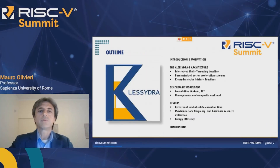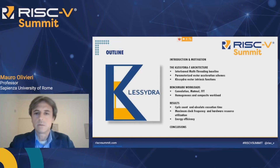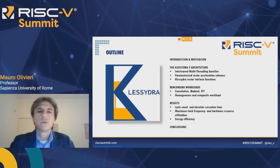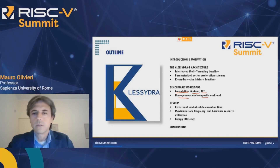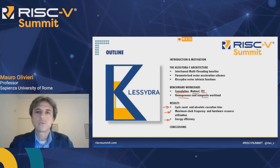We will go through, first of all, the background application and the motivation that led us in the development of this work. Then we will describe the Classybra microarchitecture, talking about multi-threading and parameterized vector acceleration schemes, and also a few words about the software layer. We will discuss performance evaluation considering convolutions, matrix multiplication, fast Fourier transform, both in a homogeneous and composite way. We will discuss results in terms of cycle count, absolute execution time, maximum clock frequency, and energy efficiency, and then we will take our conclusions.